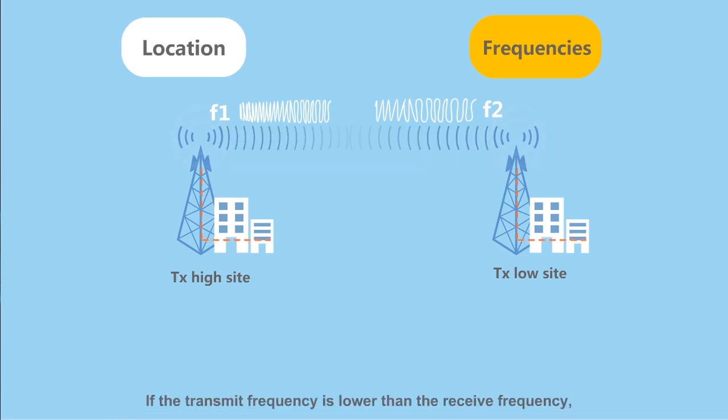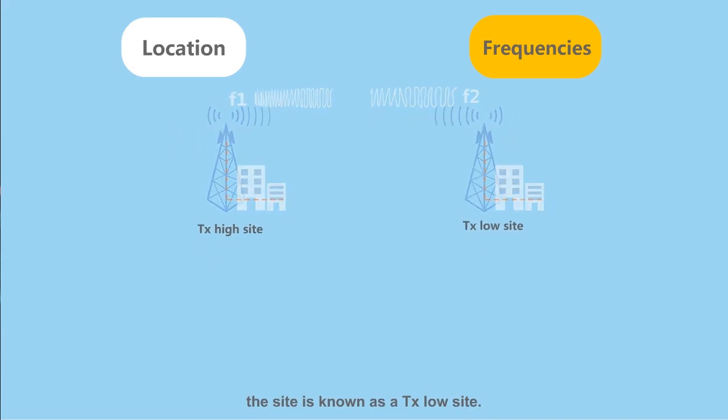If the transmit frequency is lower than the receive frequency, the site is known as a transmit low site.